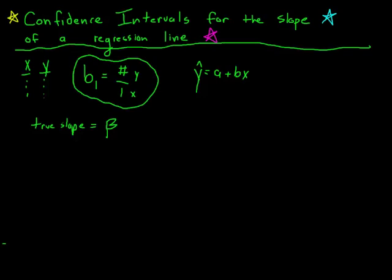The first thing we do is we start off with our slope, just like we would with a proportion or a mean. And we add or we subtract a margin of error. That margin of error is a t star, kind of like with means, times a standard error of that slope.